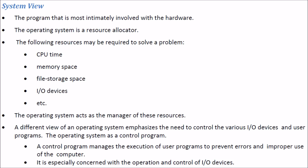The system view of the OS asks: what does the computer hardware see? The program most intimately involved with the hardware is the operating system, and from this perspective, the OS is a resource allocator. It solves problems involving CPU time, memory space, file storage space, and I/O devices. The OS acts as a manager of all these resources.